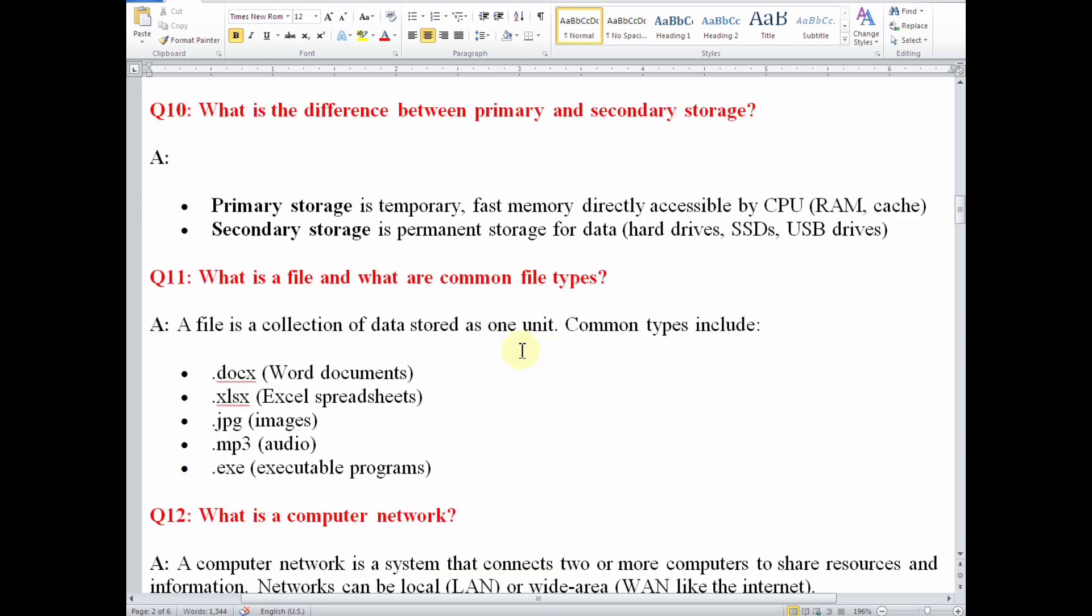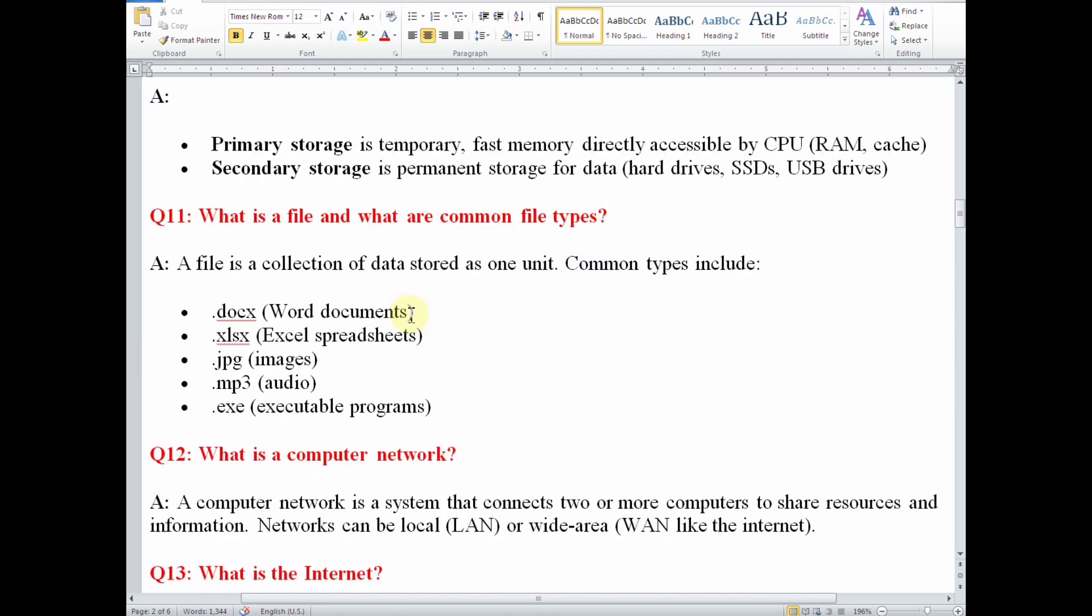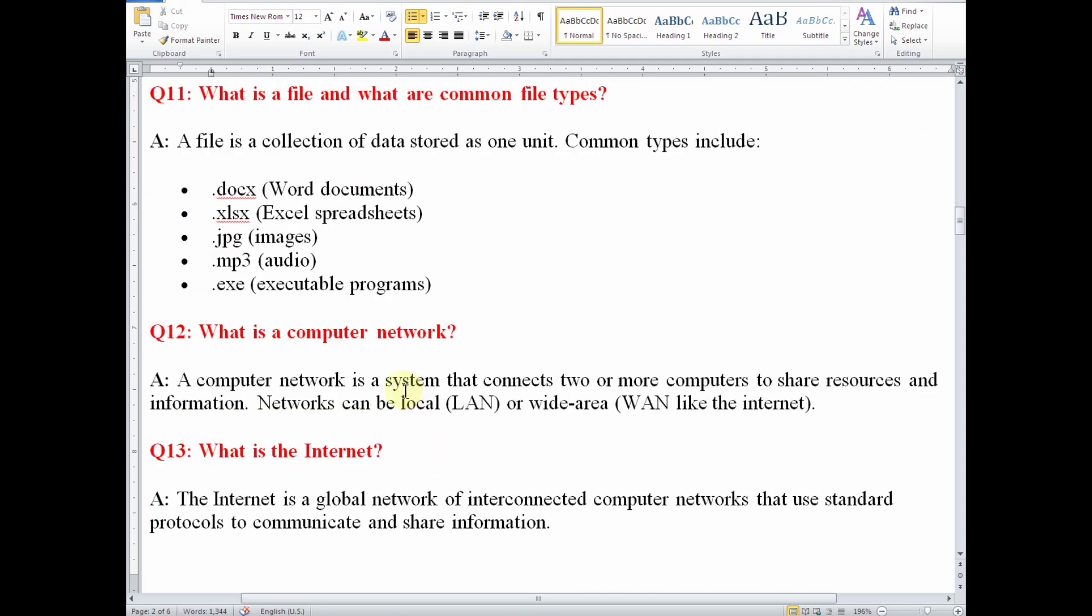Number 11, what is a file and what are common file types? A file is a collection of data stored as one unit. Common types include, you can see something like this when you are saving, like docs, which is Word documents. When it begins with Excel, that is Excel spreadsheet. JPEG, that is JPEG images. MP3, that is audio. When you see something like this, it means executable programs like that.